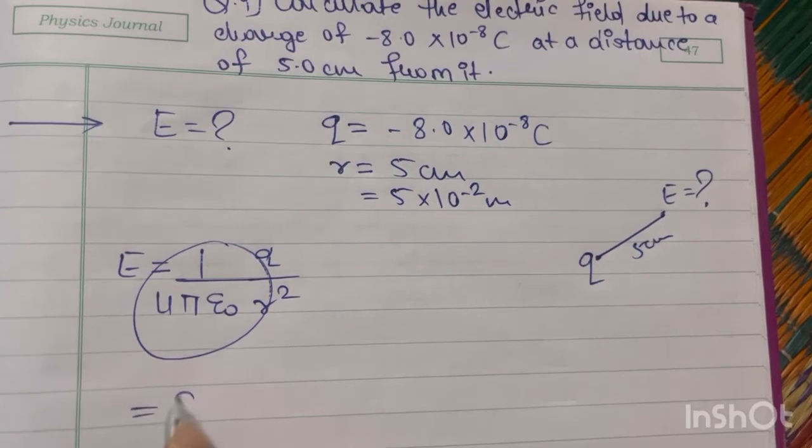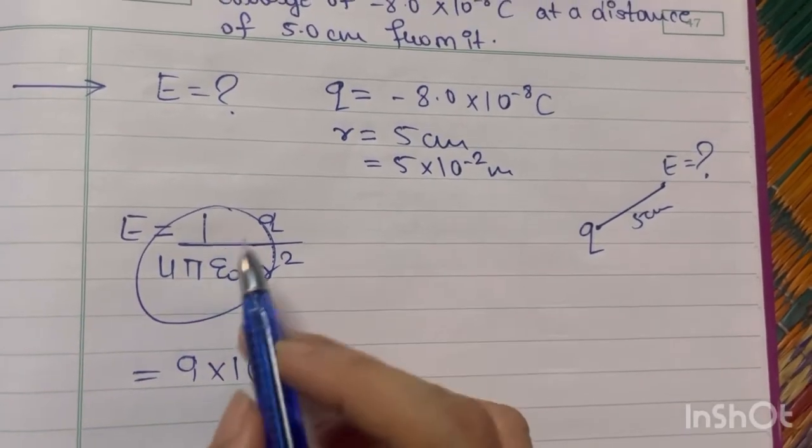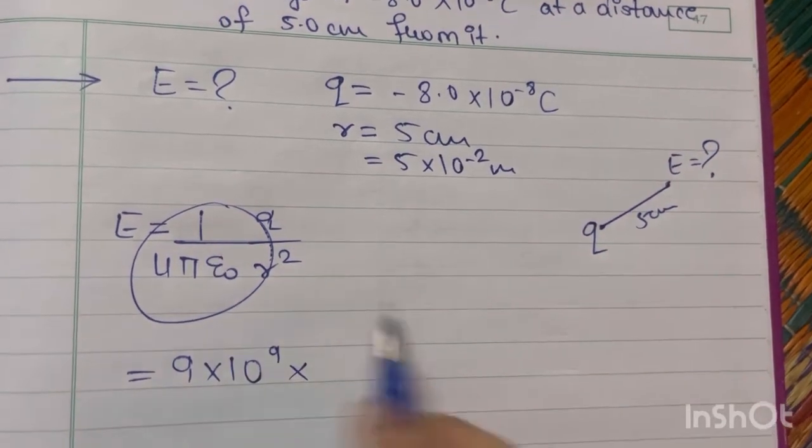1 upon 4 pi epsilon 0 is 9 times 10 raised to 9, which is already calculated. The value of this term is given in your textbook.